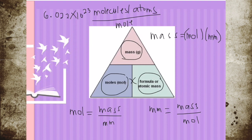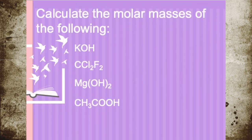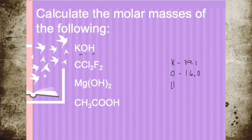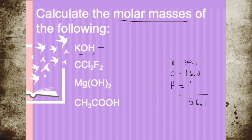Now let's try a few examples. We have to calculate the molar mass of KOH. Using the periodic table: K is 39.1, oxygen is 16.0, and hydrogen is 1. If there are no subscripts, that means there is only one of that element. So 39.1 plus 16 plus 1 gives us 56.1 grams per mole. Therefore, KOH has a molar mass of 56.1 grams per mole.